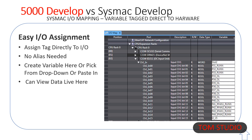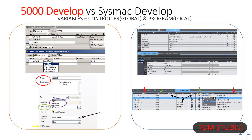Variables in both platforms have name, comment, data type, network type, and constant. Sysmac does not do alias like Logix does, unless you use %D100 type AT addressing.